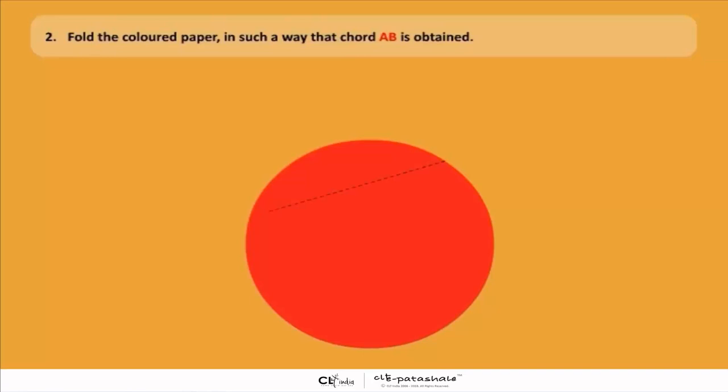After that, fold the colored paper in such a way that chord AB is obtained. Now children, look at the diagram very carefully. You have to take a point P which is in the minor segment.